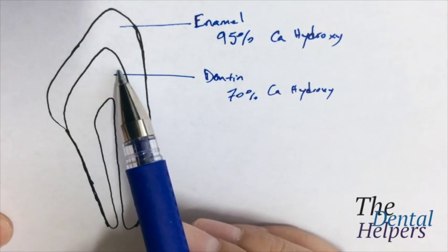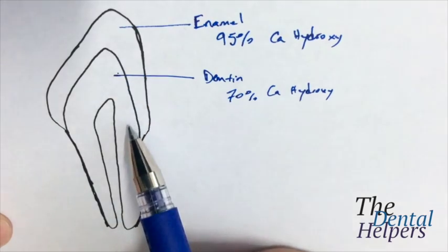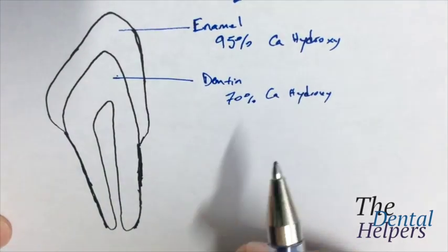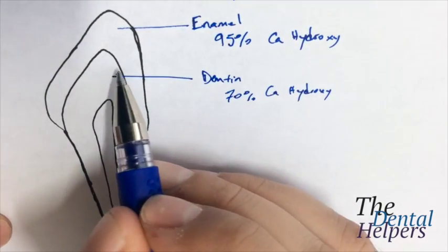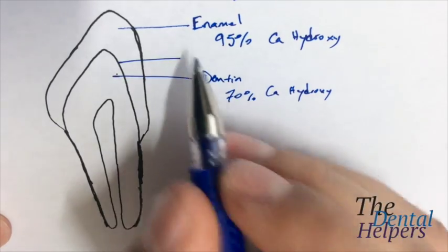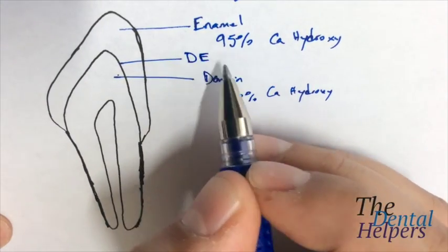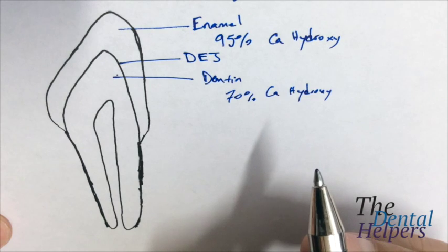And now if we look at it, there's this line that separates the enamel from the dentin. And as you might have guessed it, this is the DEJ, or dental enamel junction.